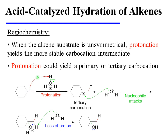In this case, protonation of the alkene could afford either a primary or a tertiary carbocation. So the reaction proceeds through the more stable tertiary carbocation, which in turn is attacked by water. The oxonium ion loses a proton, and this yields the final alcohol product.